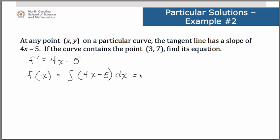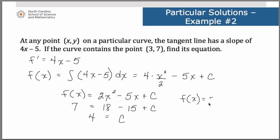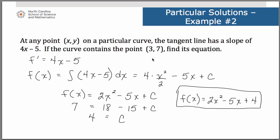The antiderivative of 4x: we keep the 4 and multiply by x²/2, minus 5x plus c. Now we know the point (3, 7) is on the curve. Simplifying, this is obviously a quadratic. We are told the point (3, 7) needs to lie on this curve, so the function value is 7. Substituting 3 in for our x's gives us 18 − 15 + c, so c is equal to 4. That means our function is 2x² − 5x + 4. This is the particular solution based upon the initial condition that the point (3, 7) had to lie on the original curve.